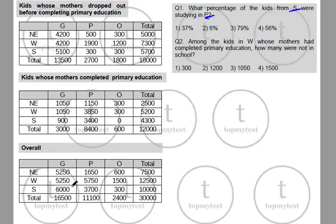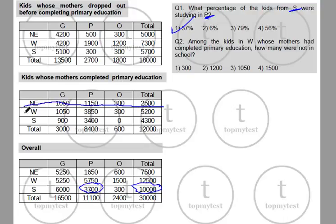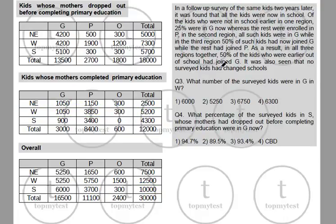Question 1: What percentage of kids from South were studying in P? Out of all 10,000 kids in South, 3,700 were in P — so 3,700 / 10,000 = 37%. Answer: option 1. Question 2: Among kids in West whose mothers had completed primary education, how many were not in school? Answer: 300. Option 1.